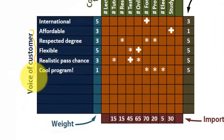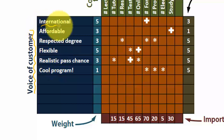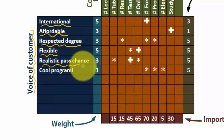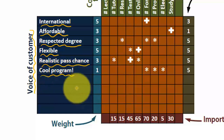On the left side, we see the so-called Voice of Customer — what the customer, the potential student, says he or she wants. The program should be international, affordable, the degree should be respectable, the program should be flexible, there should be a realistic pass chance, and the program should be cool. These are just fictional answers.